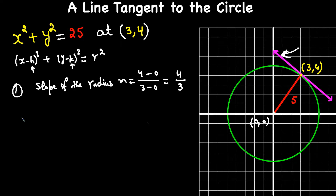The second step uses a theorem: the line that is tangent to the circle is perpendicular to the radius. This radius and the tangent line at this point make a 90-degree angle. So if we know the slope of the radius, we can write the slope of this tangent line.